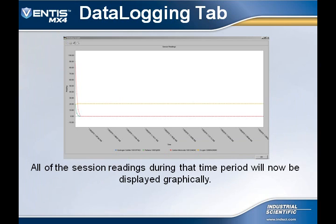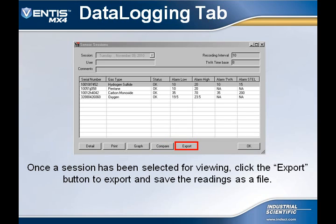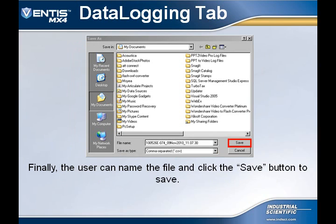This is a graphical display of all the sensors and their readings for that time period. Returning to the downloaded session, selecting the Compare button will allow comparing of data from other sessions. Selecting the Export button allows the data to be exported and saved to a file. To save the file, select a folder to save it in, name the file, and select the Save button.